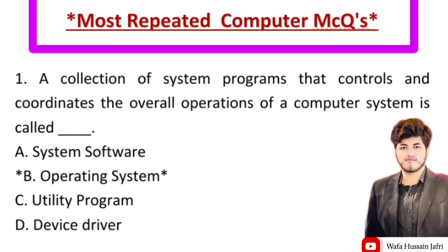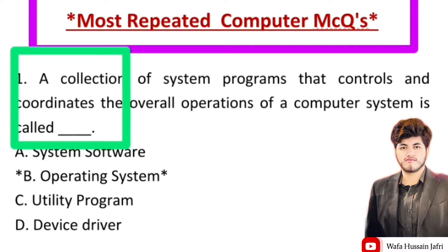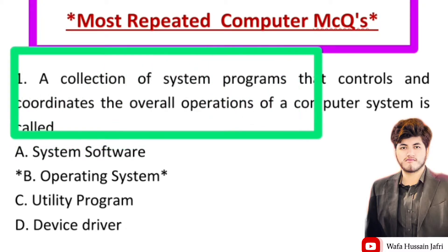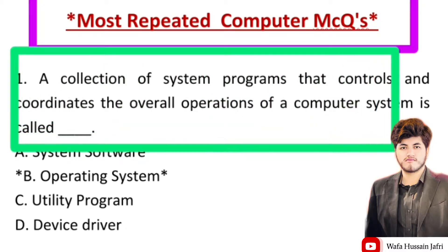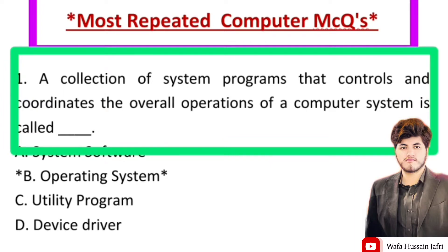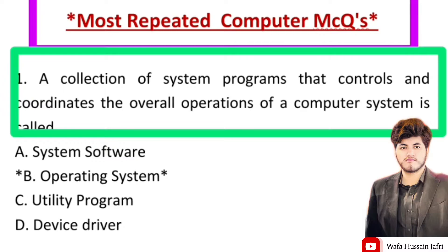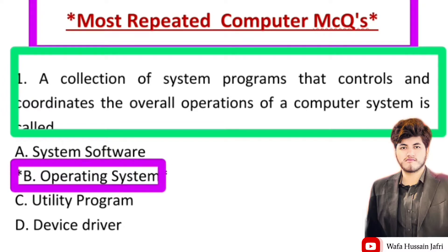Our first MCQ is: a collection of system programs that controls and coordinates the overall operation of a computer system is called — the right answer is operating system.